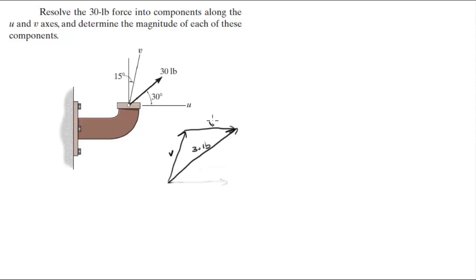Now that you have a triangle, let's call this U. Now you know that this angle right here is 30 degrees and you know that this angle right here is 15 degrees. So finding this angle right here, it's all a matter of doing 90 minus 30 which is 60, minus 15 is 45.